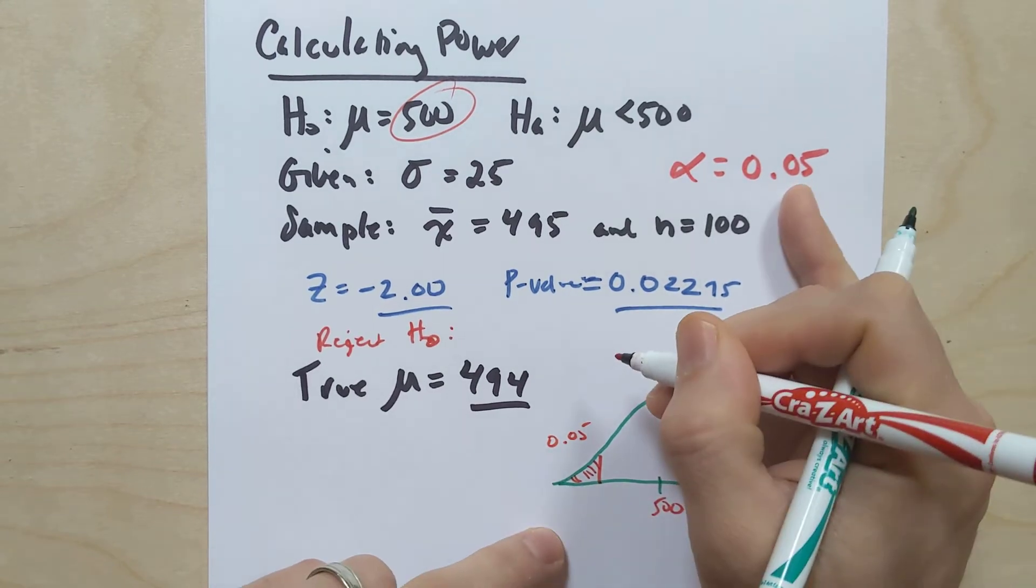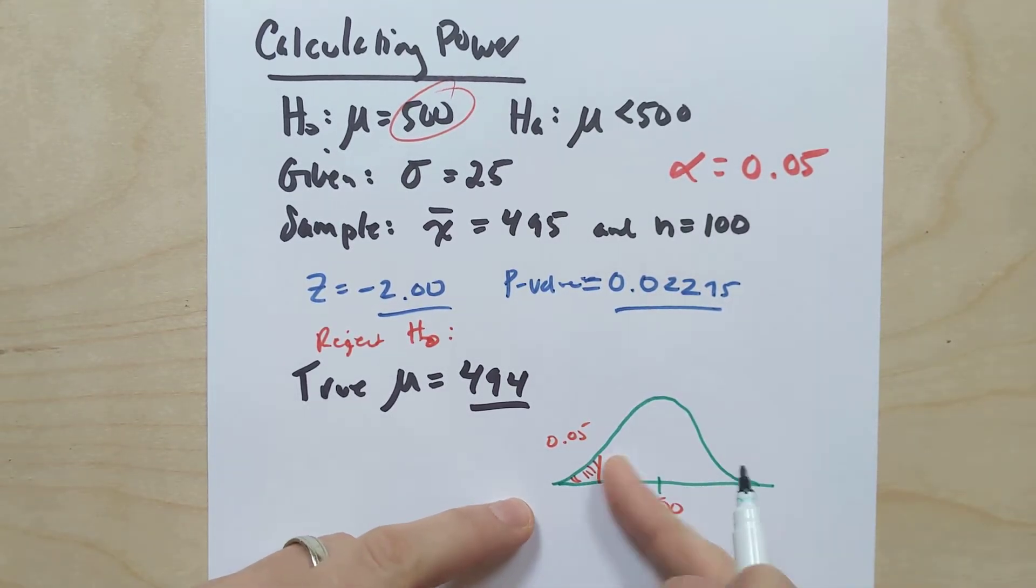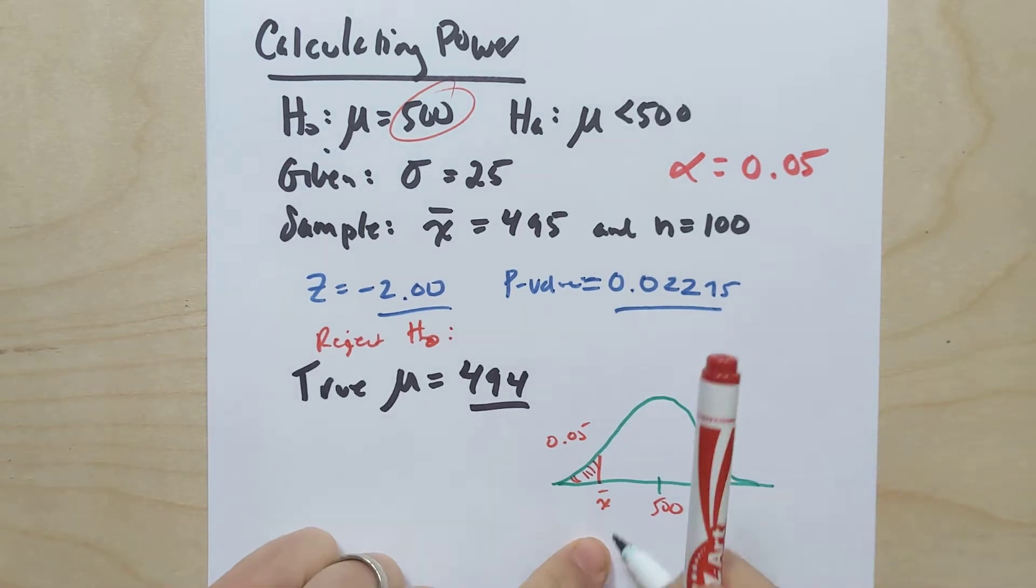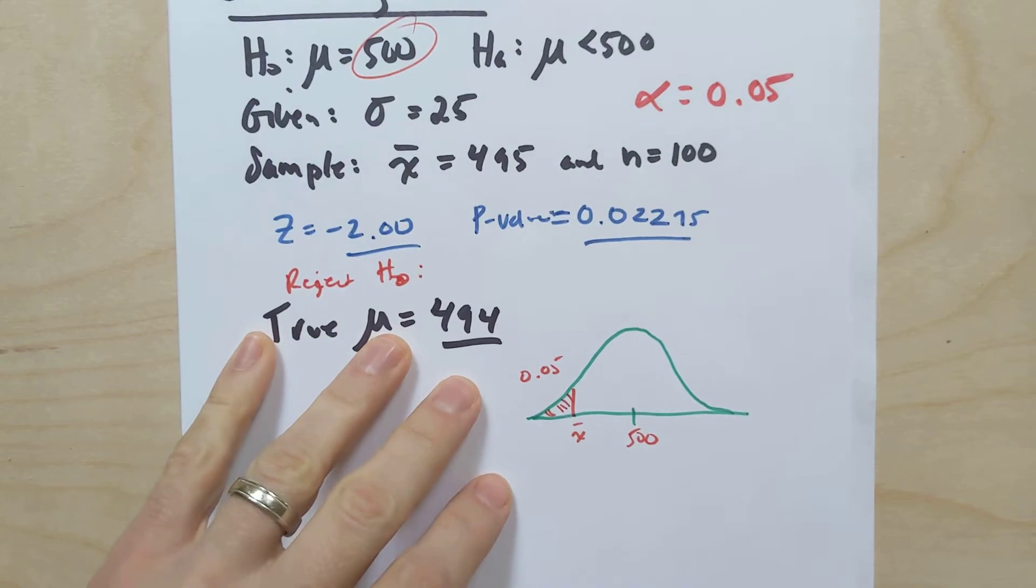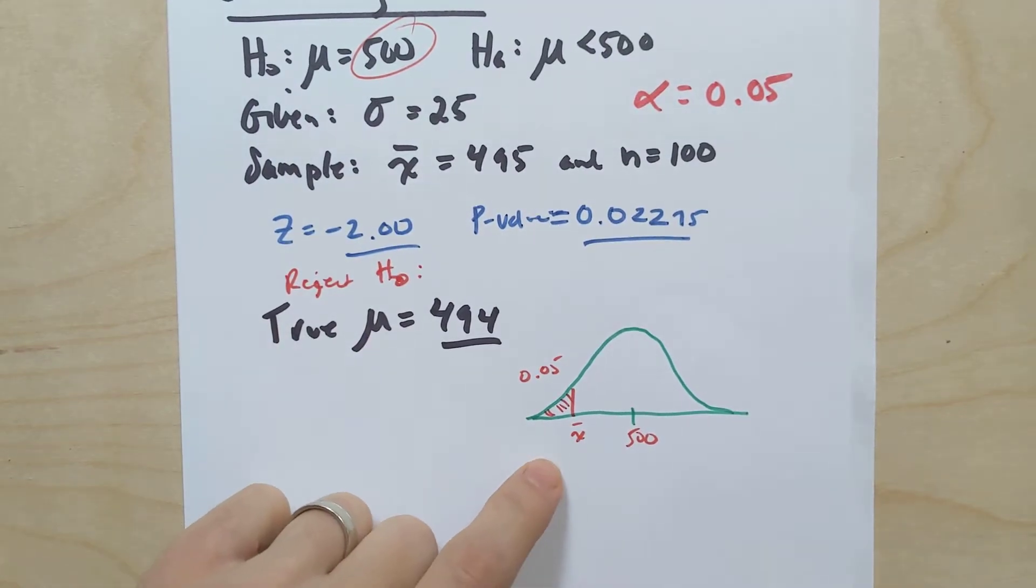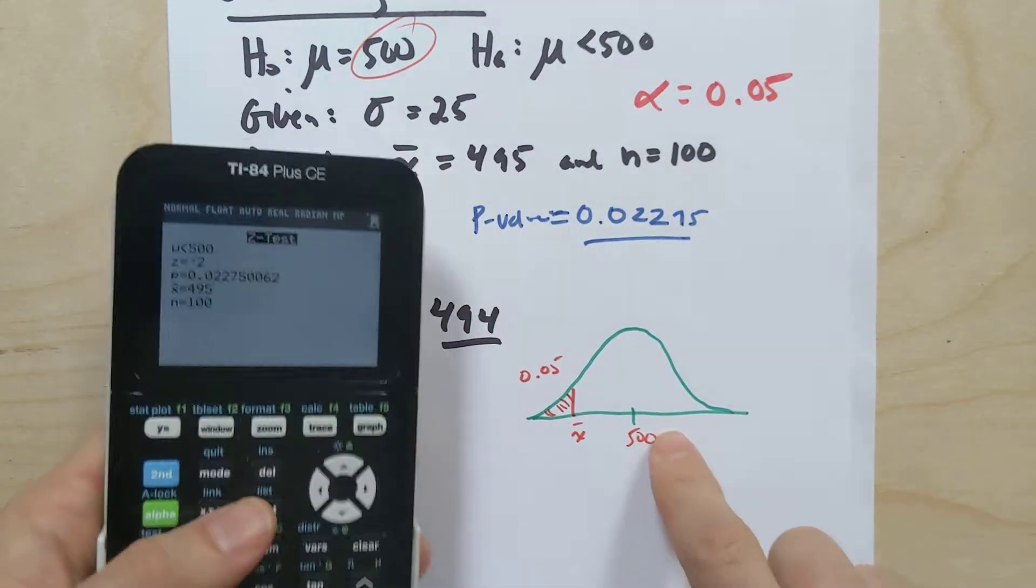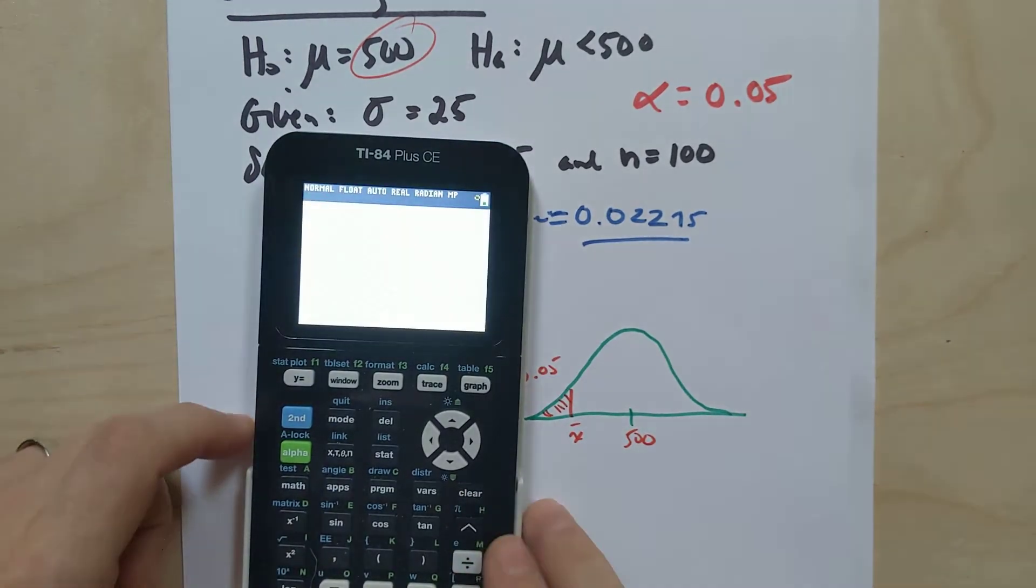So the first thing we're actually going to do is figure out what that boundary rejection value of a sample mean would be, right? How low would a sample mean have to get so that we would have rejected it based on this null hypothesis? We know that there was a 5% chance.